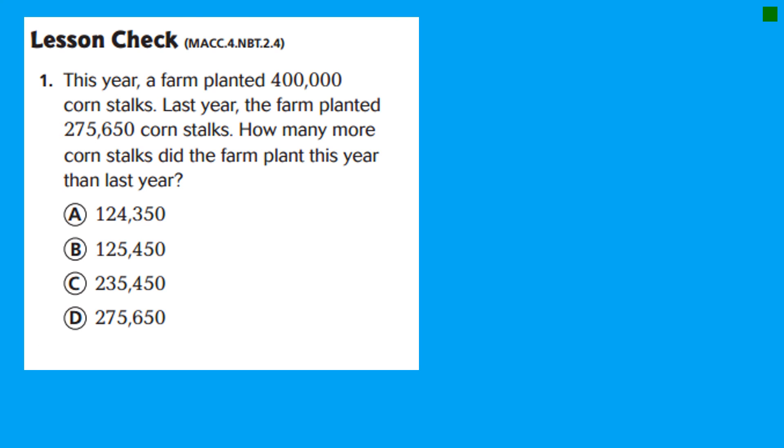All right, now we're on the lesson check, boys and girls, on the back. It says, this year a farm planted 400,000 corn stalks. Last year, the farm planted 275,650 corn stalks. How many more corn stalks did the farm plant this year than last year? How many more, they're asking, how many more, how many fewer, how much taller, how much shorter? All of those are asking difference. And difference, as you know, is the answer to a subtraction problem.